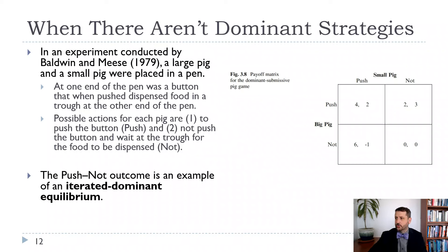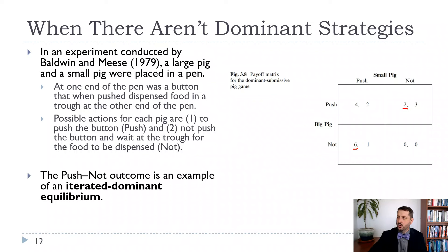That's not usually how I solve these — I prefer the underlining method. I say: I'm the big pig. If the small pig pushes, I'm choosing between pushing and not pushing — I underline the better option. If the small pig doesn't push, I'm choosing between 2 and 0 — I underline 2. This gives the big pig's best response depending on what the small pig does. Then I'm the small pig: if the big pig pushes, I choose between 2 and 3 — underline 3. If the big pig doesn't push, I choose between minus 1 and 0 — underline 0. The only mutual best response is push and not push — the same result as iterated dominance, but I find this method much easier.